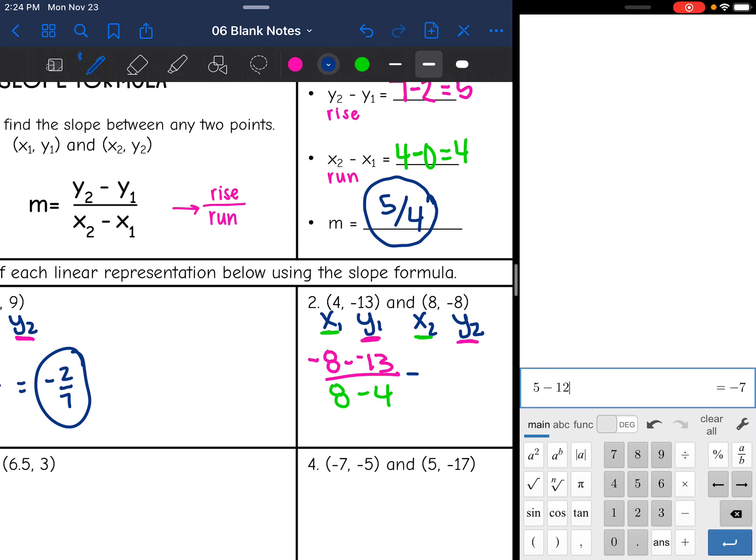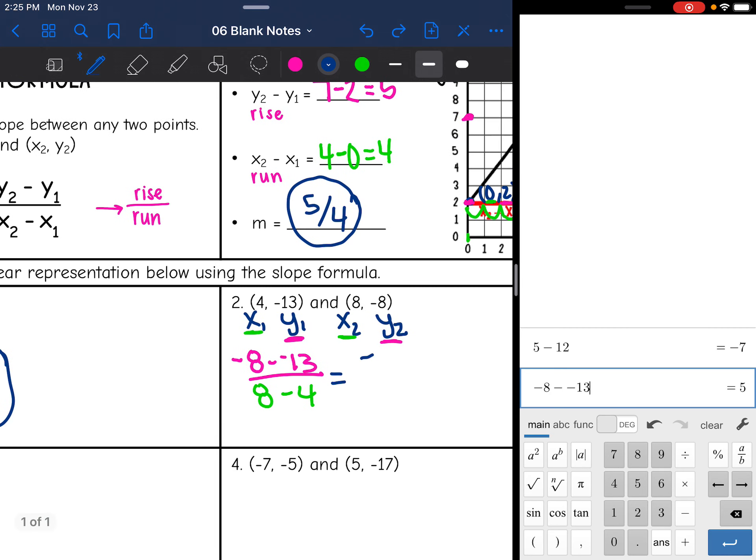Okay, you can think of the minus a negative as plus because remember, keep, change, change. Or you can just put it into your calculator. Negative 8 minus negative 13 is 5. And 8 minus 4 is 4. So the slope of these two points is 5 fourths.